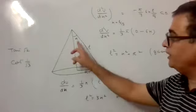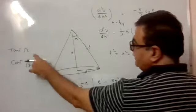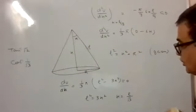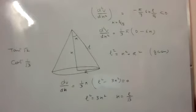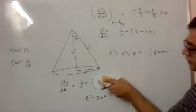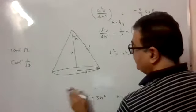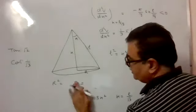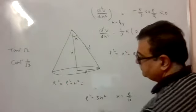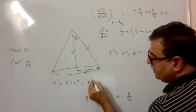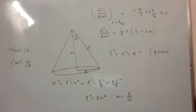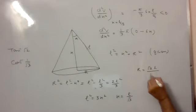If the volume is maximum, now we should find this angle. To get the angle, perpendicular is needed. For cos, base is needed. So we calculate H and L. H is already known as L by root 3. Now only R is to be calculated. R squared equals L squared minus L squared by 3, which gives 2L squared by 3. So R comes out to be root 2 times L by root 3.